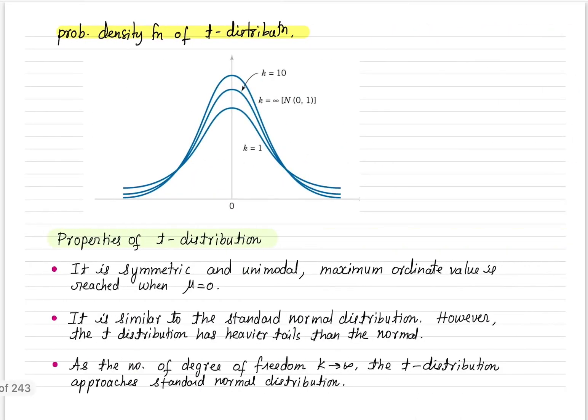The graph is interesting. The picture of the probability density function of the t distribution is almost similar to the normal distribution — unimodal and symmetric with respect to the mean, which is 0. The only difference is that the tail is heavier in the t distribution. But as k, the number of degrees of freedom, increases, the t distribution approaches the normal distribution.